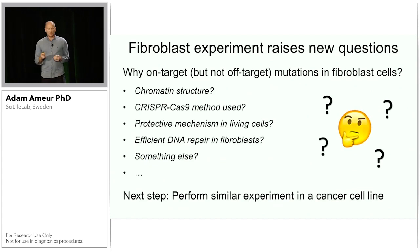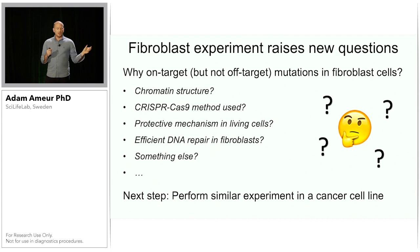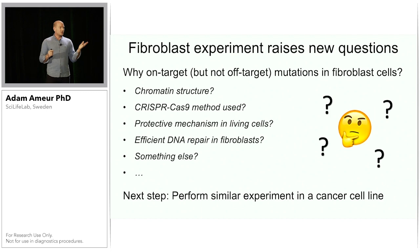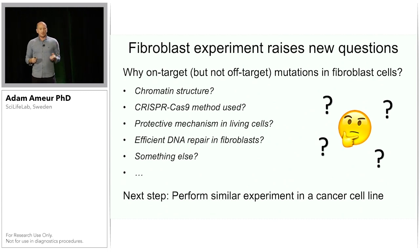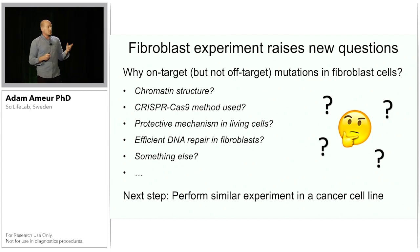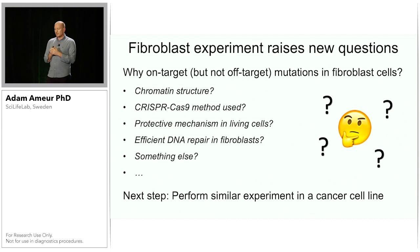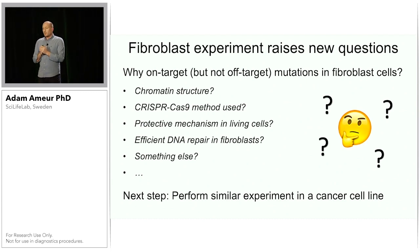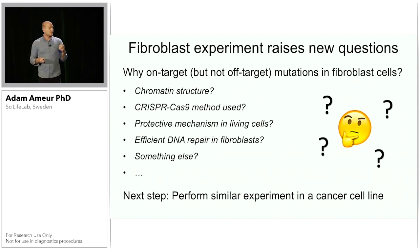This is perhaps surprising but interesting, and raises a bunch of new questions. Why do we have editing at the on-target site but not at the off-target site in these fibroblast cells? Some possibilities: maybe it has to do with chromatin structure — in fibroblasts, the chromatin is very compact and the guide RNA can't access the DNA. Or perhaps it's the CRISPR-Cas9 delivery method — using a vector may be a gentler approach, and forcing off-targets might require a different method. Or there could be a protective mechanism in living cells, or something in DNA repair. We're interested to perform similar experiments in cancer cell lines, where chromatin may be more open and DNA repair less efficient.